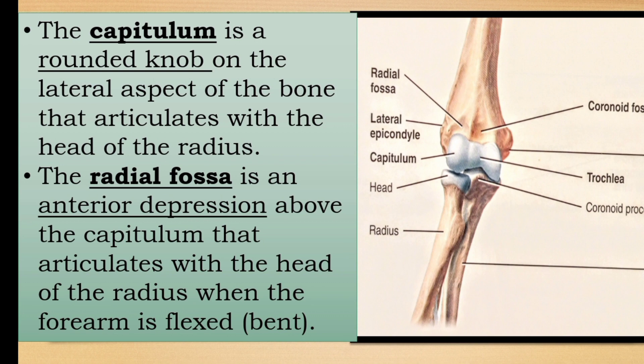The radial fossa is an anterior depression located above the capitulum. When the forearm is flexed, the head of the radius articulates with this portion — that is the radial fossa. The anterior depression above the capitulum articulates with the head of the radius when the forearm is flexed.